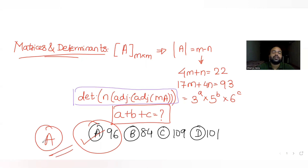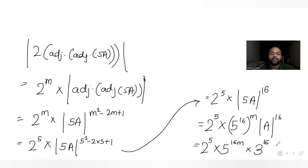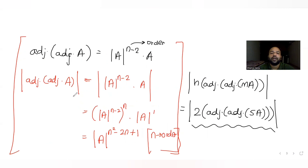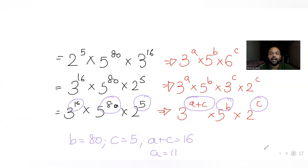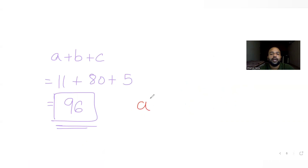The correct answer is option A: 96. The key idea used in this entire question is that det(adj(adj(A))) = det(A)^(n²−2n+1), where n is the order of the matrix. Once you know this identity, you can express the result in terms of powers of 2, 3, and 5, compare them, and find a + b + c easily.